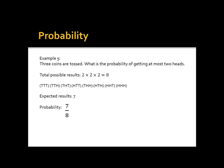Example 5. Three coins are tossed. What is the probability of getting at most 2 heads? Since there are 3 coins, the total possible result is 8. In each coin, there are 2 possible ways, so 2 times 2 times 2 is equal to 8. The total possible results are tail-tail-tail, tail-tail-head, tail-head-tail, head-tail-tail, tail-head-head, head-tail-head, head-head-tail, and head-head-head. The expected results are 7, since we are looking for at most 2 heads — only head-head-head is not included. So the probability is 7 over 8.